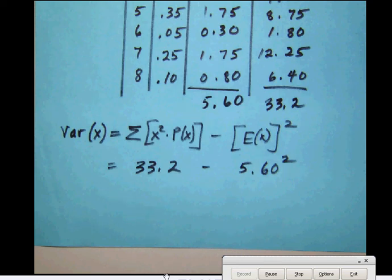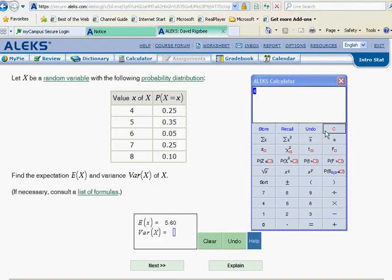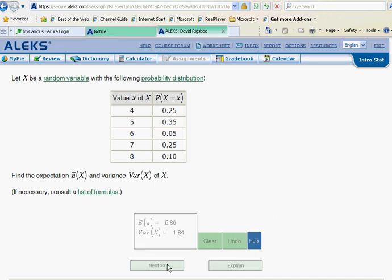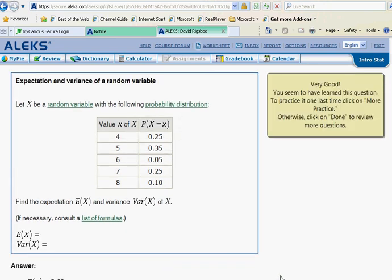So we'll pop back over here to our Alex calculator. We'll calculate 33.2 minus 5.6 squared. The answer that I get for that is 1.84. So I'll put that in right there and give that a test. And we can see here that Alex is happy.